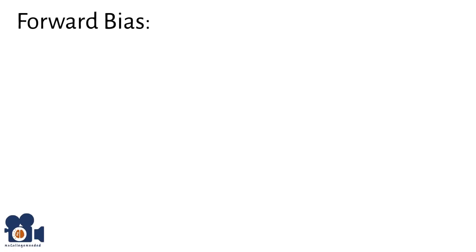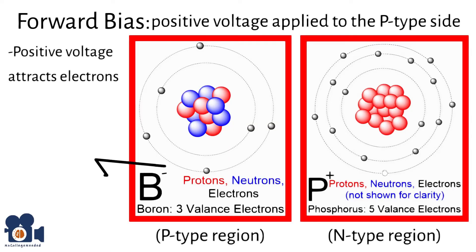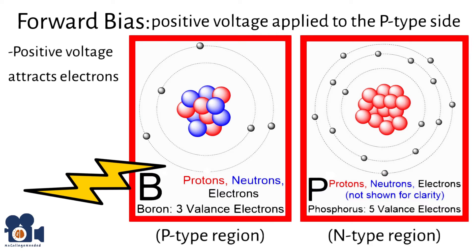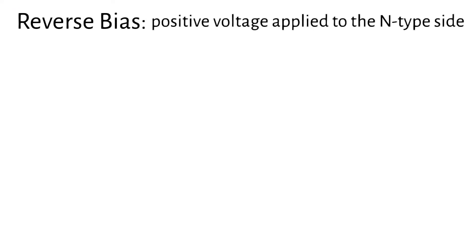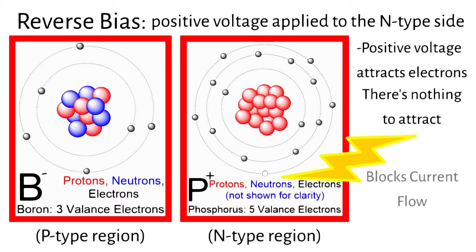The separation of these fixed charges creates an electric field that opposes further diffusion of electrons and holes. When a forward bias — positive voltage applied to the p-type side — is applied, the electric field at the junction is reduced, allowing charge carriers to cross the junction and conduct current. Think of it as positive voltage coaxing the negatively charged electrons out of the holes, allowing for the reintroduction of the movement of those holes. Conversely, when a reverse bias — positive voltage applied to the n-type side — is applied, the electric field at the junction is increased, preventing charge carriers from crossing and thereby blocking current flow.